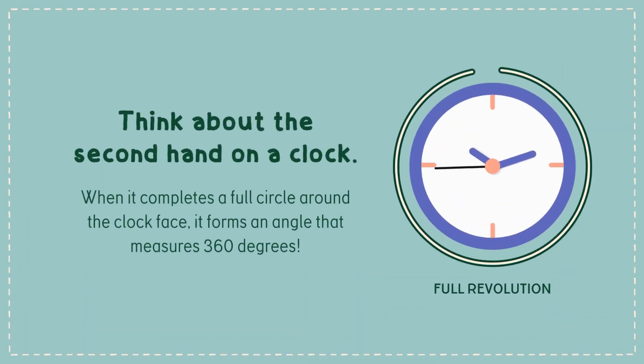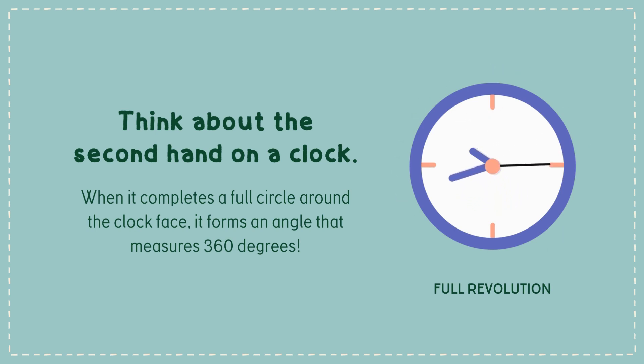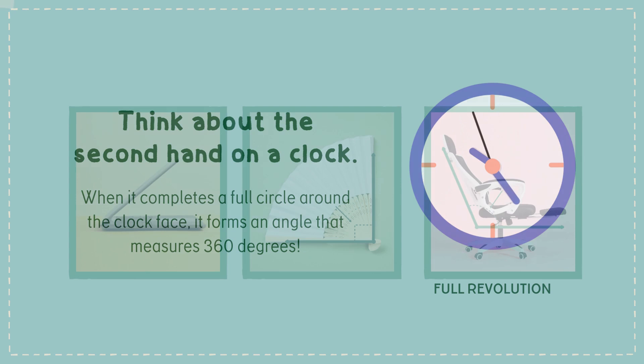Think about the second hand on a clock. When it completes a full circle around the clock face, it forms an angle that measures 360 degrees. That's called full revolution.